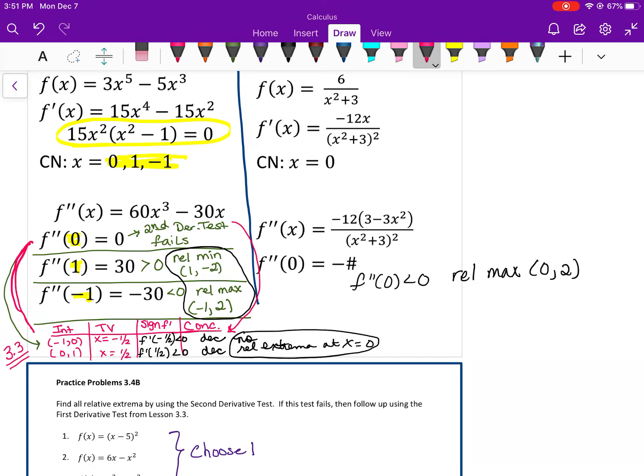We get decreasing for both of those intervals, so you don't get any extrema there. Then you can use your second derivative test on the one and the negative one to show that you have your min and your max. That's what we covered today on Monday.